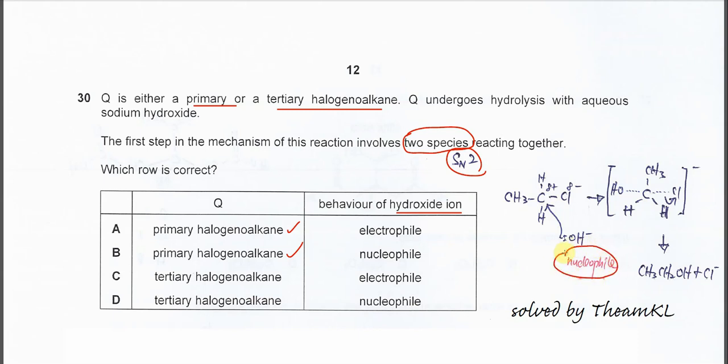When it's an electron-rich species, it's a nucleophile, not an electrophile. Electrophile is the one that needs electrons. So therefore, the answer is very clear, it's B. Okay, that's all. Thank you.